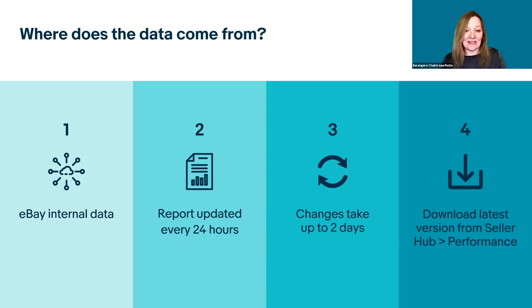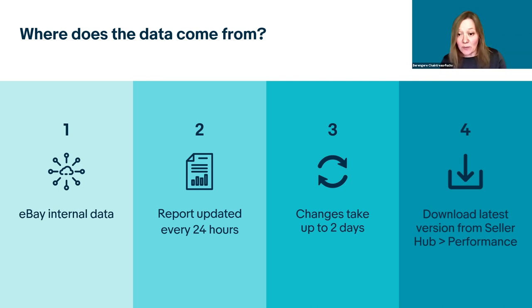At this stage you may be asking where the data comes from. The benchmark data — i.e. the top and bottom 10% in terms of impressions, views and sales — is internal eBay data from the last 31 days, and these are things we are always tracking. Your report is updated once a day, but it can take up to two days for changes to be reflected in the report. Furthermore, once you've downloaded your report, this analysis is static and won't change as your performance does. Therefore, we recommend that you download your report once a week or more if needed, so that you can actively monitor your progress.